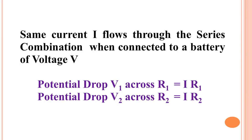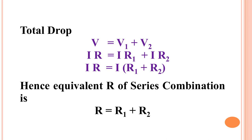The same current I flows through the circuit, but since the resistance values are different, the potential drop across R1 and R2 will be different. The potential V1 across R1 equals I×R1, and V2 across R2 equals I×R2. The total potential drop across the combination is V1 plus V2. By Ohm's law, the total potential drop equals current times the equivalent resistance.